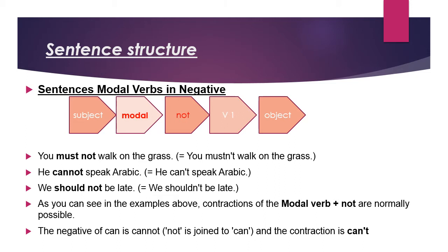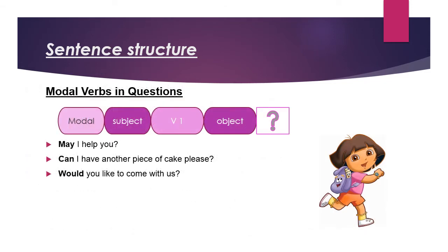Now the structure in interrogative questions — modal verbs in questions. The structure is: Modal + Subject + Verb (first form) + Object + question mark. For example, 'May I help you?' — 'may' is modal, 'I' is subject, then verb, then object, then the question mark. 'Can I have another piece of cake please?' 'Would you like to come with us?' In interrogative form, we always use these modals at the very beginning.